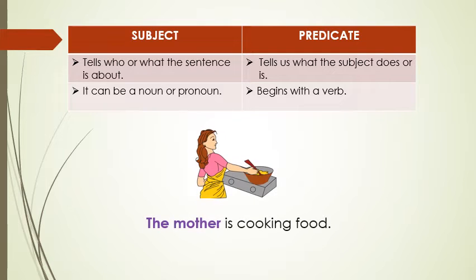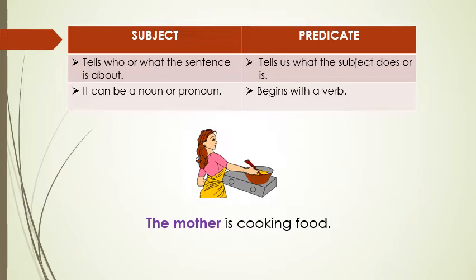Let's see the same example: 'The mother is cooking food.' Every sentence has two parts — one is subject, the other is predicate. If I ask who this sentence is about, we can clearly say that the sentence is about the mother. And the mother is a noun. So it is called the subject of the sentence.